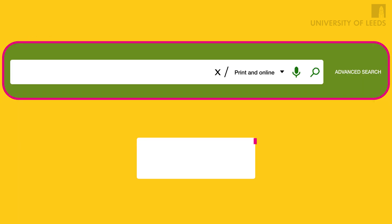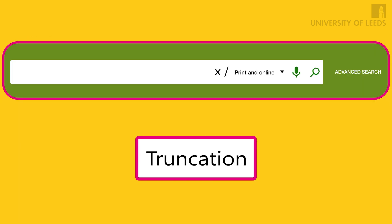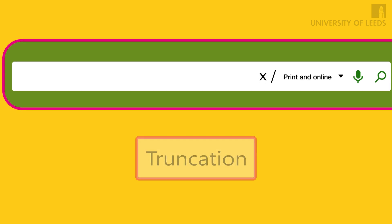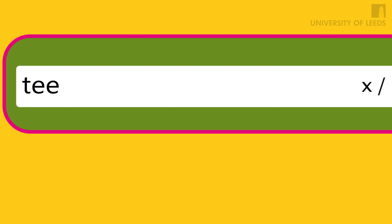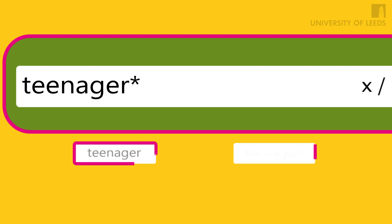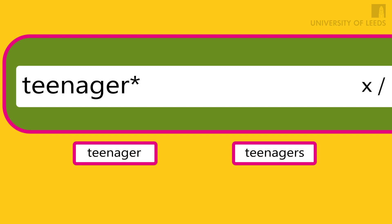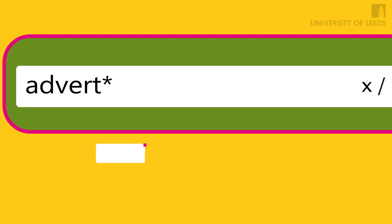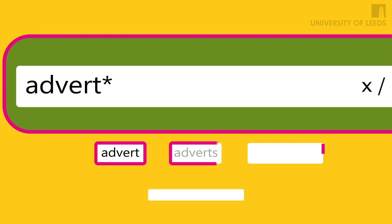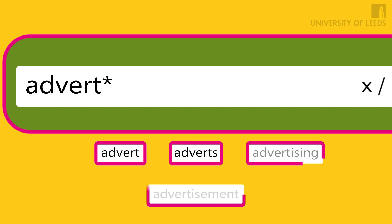You could also try using truncation. Truncation means replacing the word ending with an asterisk or star symbol in order to pick up all possible endings to that word. If your search were about advertising to teenagers, you could type in teenager* to pick up both teenager and teenagers in the same search, and advert* to pick up advert, adverts, advertising and so on.